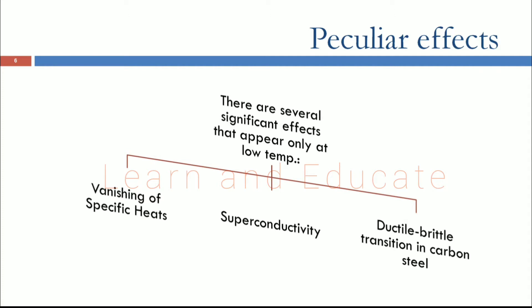Some materials show peculiar effects when the temperature is lowered to the cryogenic range. For example, the vanishing of specific heat — the amount of heat required to raise the temperature of a unit mass by one degree — occurs for some substances. Other effects include the producing of superconductivity, and the ductile-to-brittle transition in carbon steel when cooled to cryogenic range.